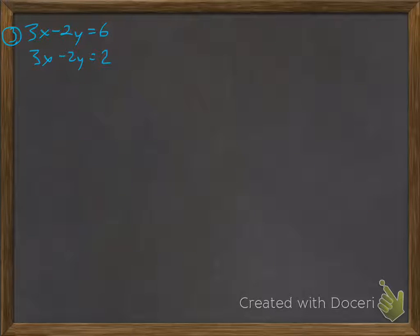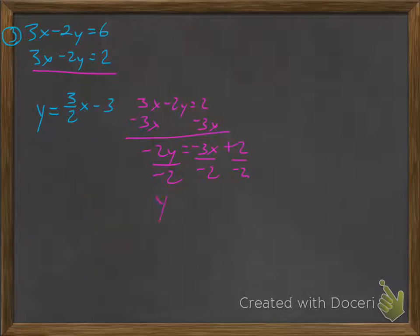So for this one, the first equation is the same as the last one, so I'm not going to solve that. Again, it's going to come out to y equals positive 3 over 2x minus 3. The second one I do need to solve because it's not the exact same. So in this one, I subtract the 3x. I get negative 2y is equal to negative 3x plus 2, divide by negative 2. And y is equal to positive 3 over 2x minus 1. So my m here is 3 over 2, my b is negative 1. My m here is 3 over 2, my b is negative 3.